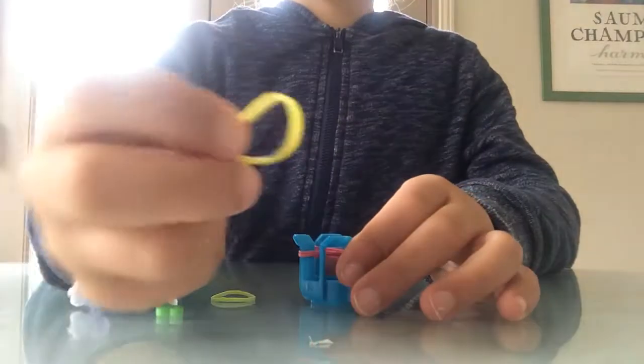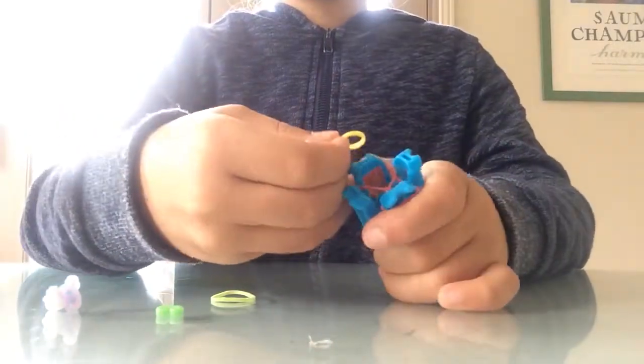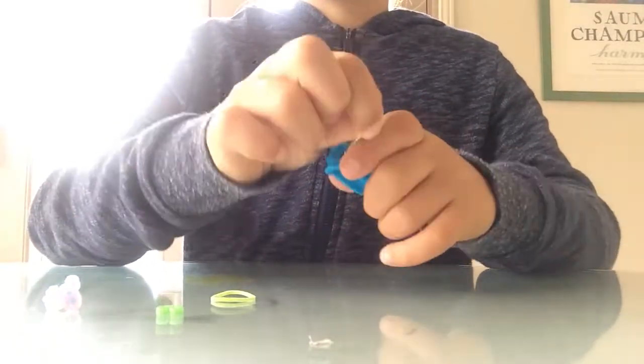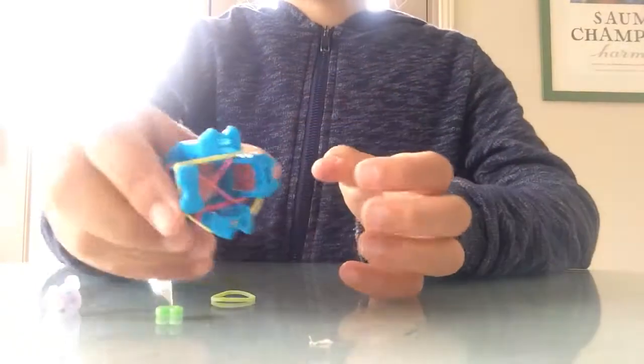Then take your inside one. For me it's yellow. Put them over the bands that have the rubber bands. So it should look like this.